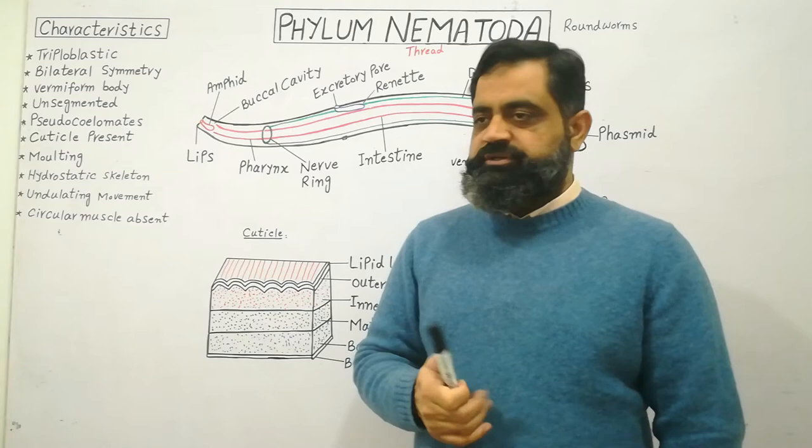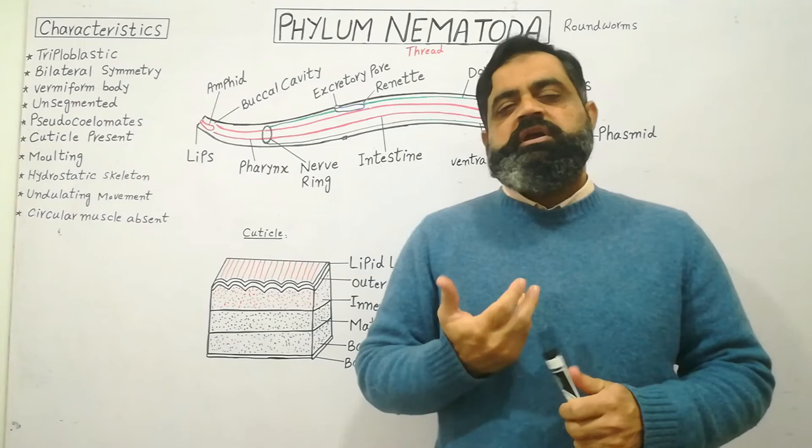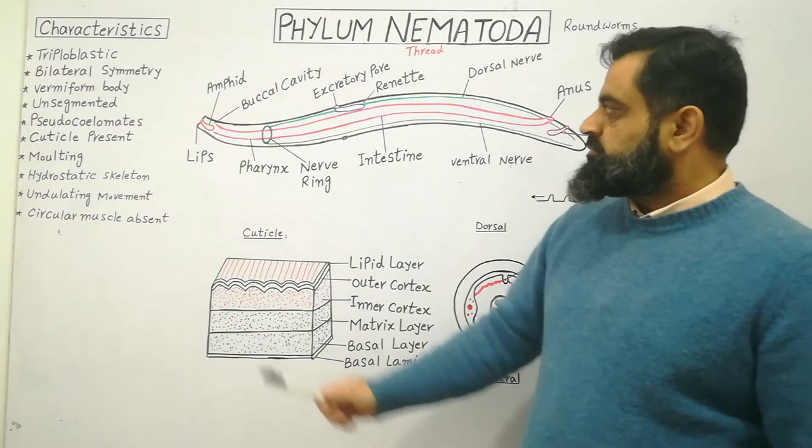Just near the amphid there is a mouth from where the animal can feed. They can feed on different types of food — they are omnivores and carnivores. We will discuss their diet further in the digestive system section.